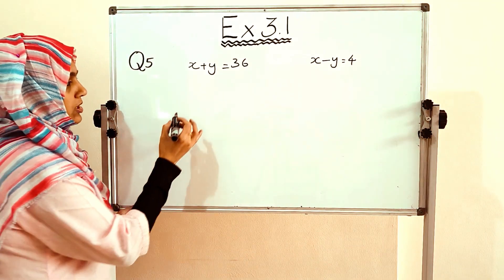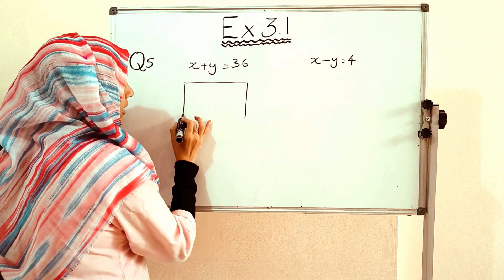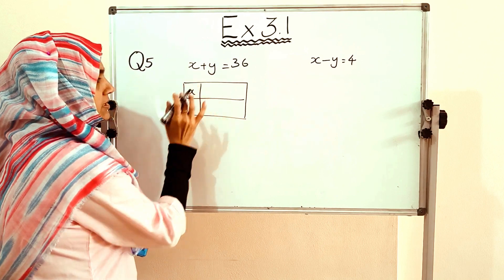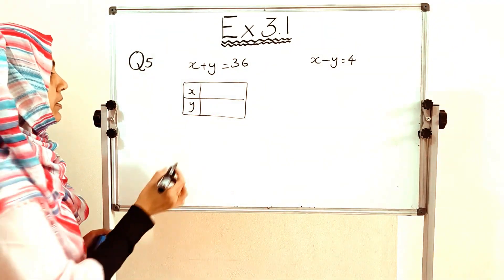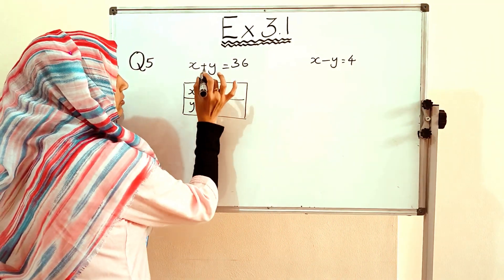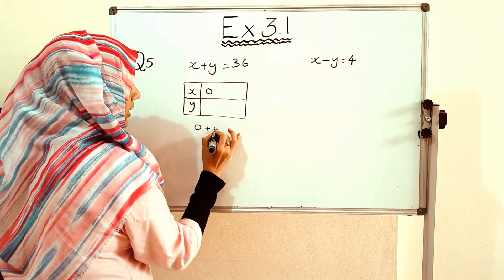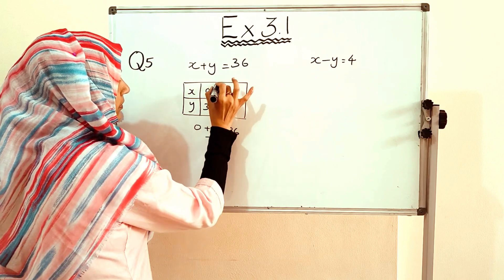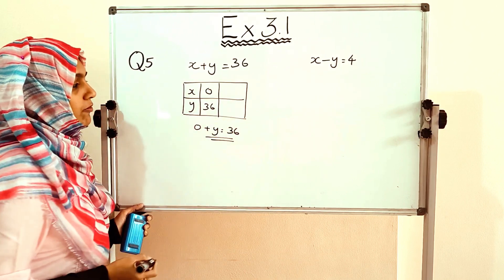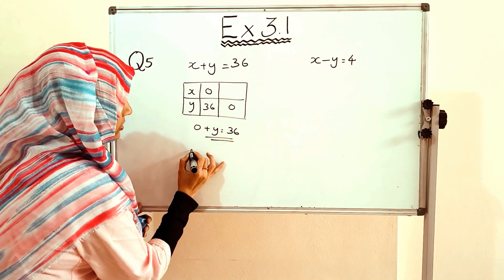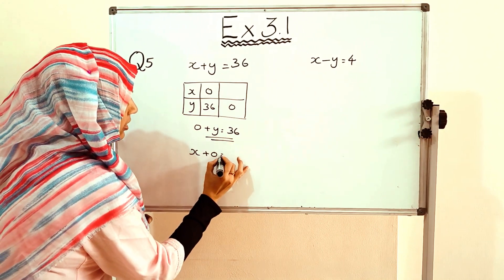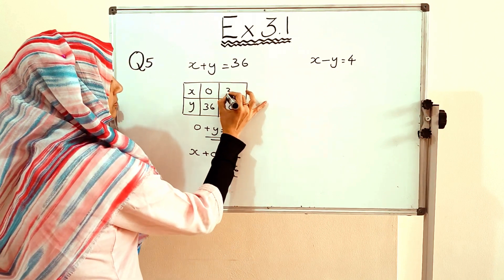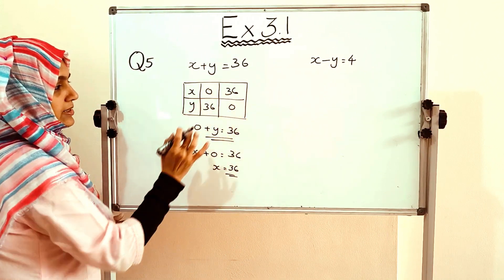First step: draw a table and find values of x and y for equation 1. When x = 0, then 0 + y = 36, so y = 36. When y = 0, then x + 0 = 36, so x = 36.